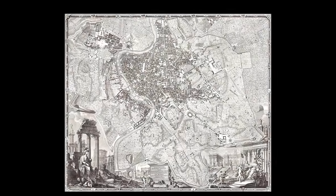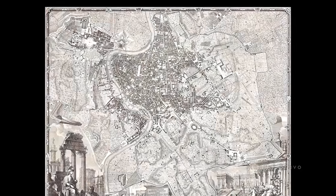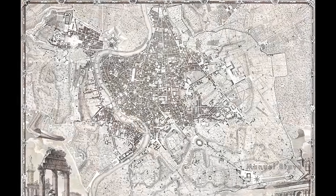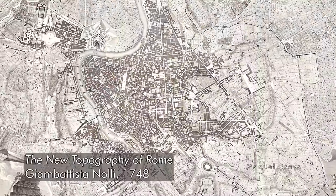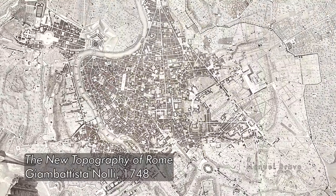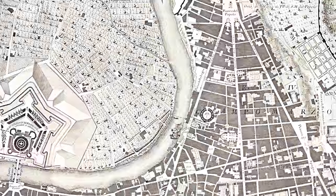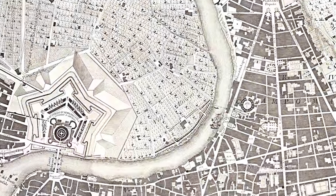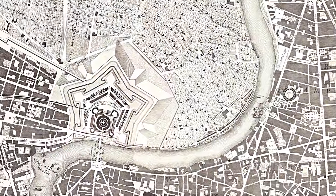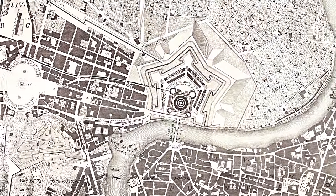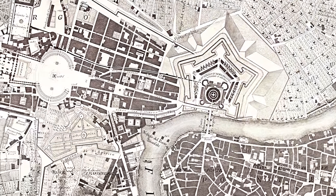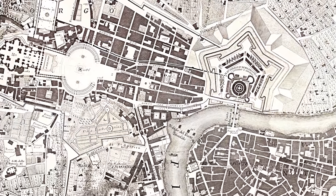In 1748, architect Gian Battista Nolli made this map of Rome. It was so accurate that by the 1970s, the Italian government still relied on it as the basis for maps of the city, and used it as a reference for urban planning.